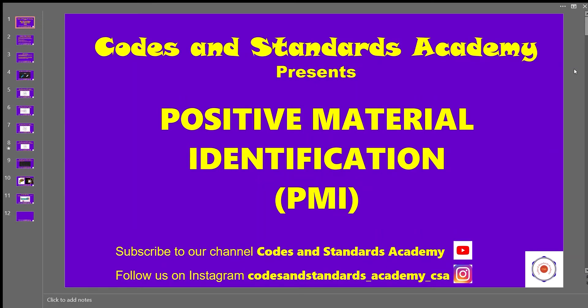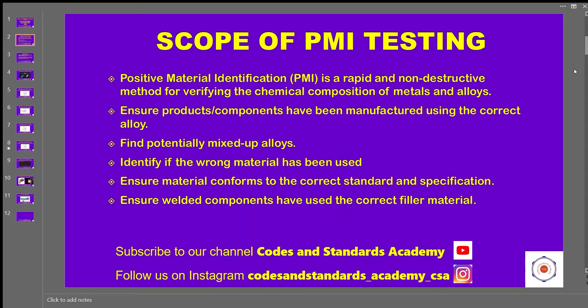Let's get into the scope of PMI. PMI is a rapid and non-destructive method for verifying the chemical composition of metals and alloys to ensure products have been manufactured using the correct material, to find potentially mixed-up alloys, to ensure the material's conformance to codes and standards specifications, and to find that welded components have used the correct filler materials and consumables.